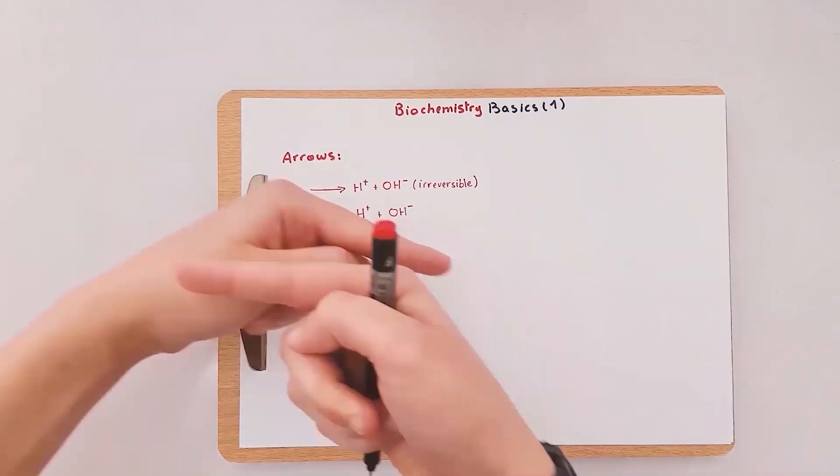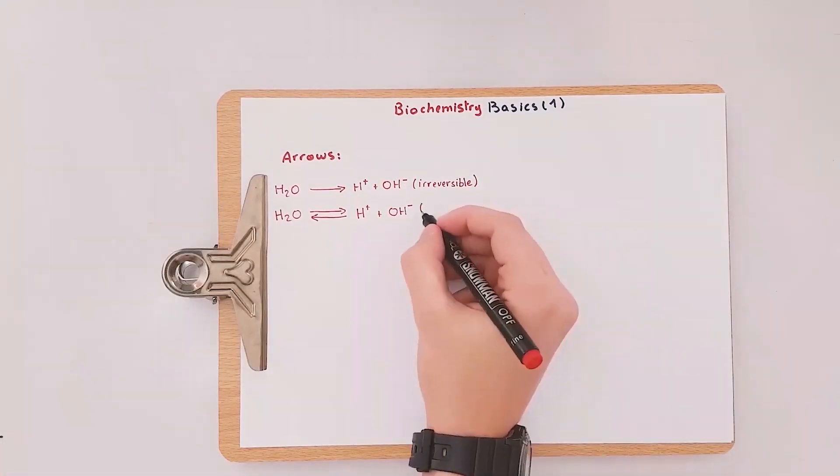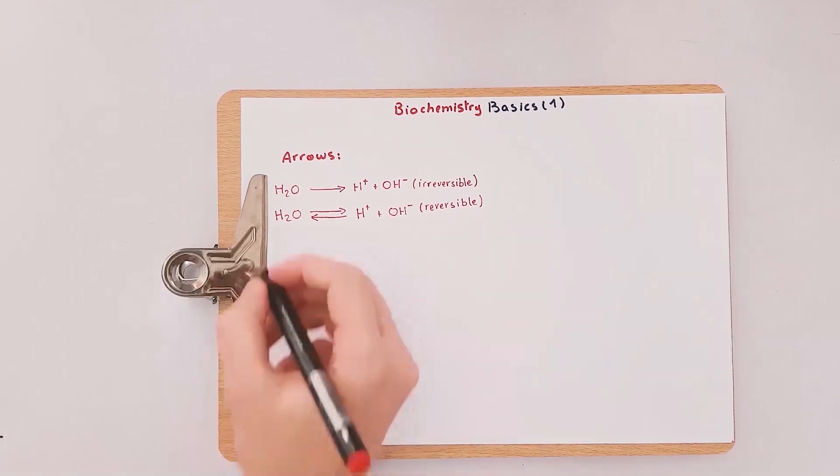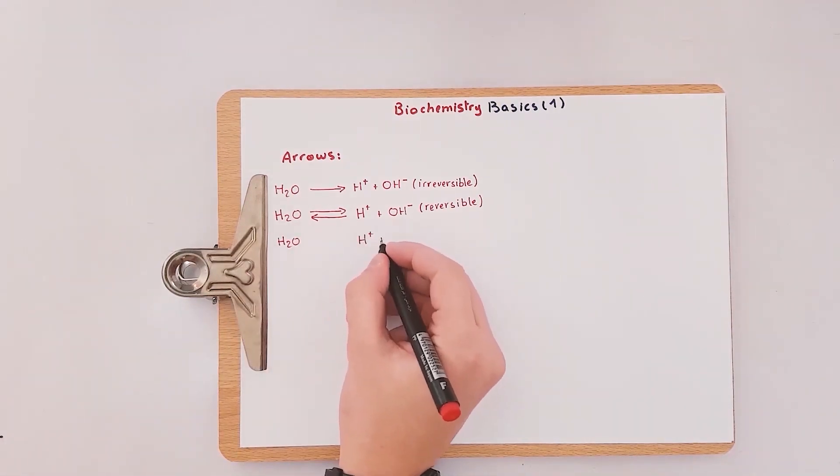The second arrow is actually two arrows opposite to each other, and this signifies that the reaction is reversible and can proceed in either direction and the ions can reform the water.